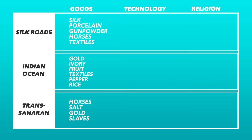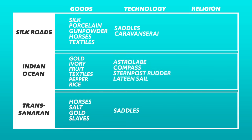In terms of technology, the Silk Roads gave birth to saddles, which helped merchants travel farther and bear heavier loads, and caravanserai — little travel stops spread out over about a day's travel so that merchants could stop and refresh themselves before moving on. The Indian Ocean routes gave us new maritime technology, including navigational aids like the astrolabe and the magnetic compass, as well as new ways to travel faster and with more precision like the stern post rudder and the lateen sail.